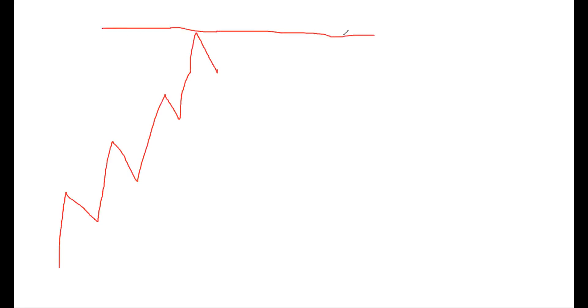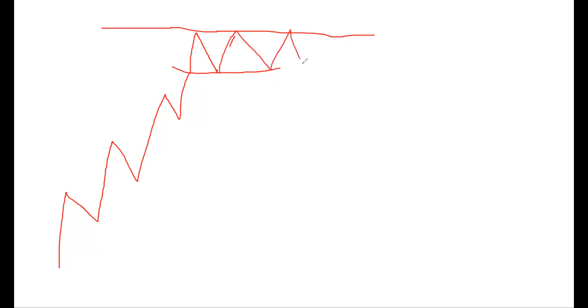The price moves like this, and at one point it will go up and come back. There will be some kind of resistance at this level, and then again it will go up, take resistance from there, and start falling down. Once it breaks this level it will fall — that's how the double top pattern forms. If there is a triple top pattern, it will go up, come back, go up again, and then start falling — that's how double top, triple top patterns form.